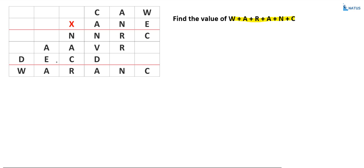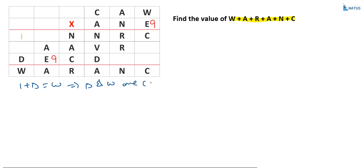So what is the value of E? That is equal to 9 — that is fixed. Write down 9 wherever E exists. Now, if you take the leftmost column, these two letters are different. Suppose one carry is generated in this column, then 1 plus D is equal to W, which means D and W are consecutive numbers and W is greater than D.